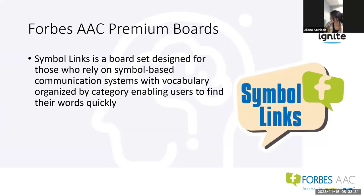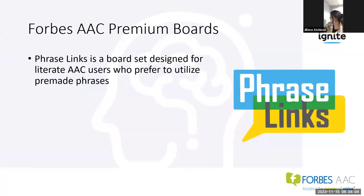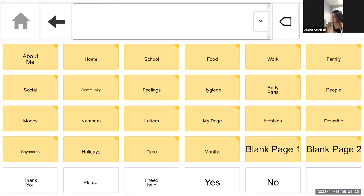SymbolLinks is a board set designed for those who benefit from the use of picture symbols in their communication. SymbolLinks is offered in layouts 4, 8, 12, 20, and 30. It provides essential support for those who rely on symbol-based communication systems, with vocabulary organized by category enabling users to find their words quickly. PhraseLinks is a board set designed for literate AAC users who prefer to utilize pre-made phrases. The main board includes several quick-fire phrases used often in conversation like yes, no, please, and thank you. A keyboard is included for spelling and literacy, and boards can be customized with personal or preferred information.